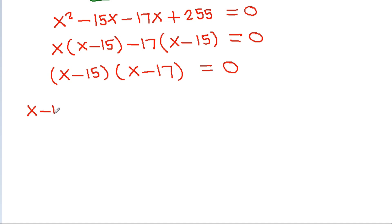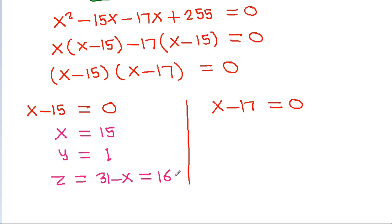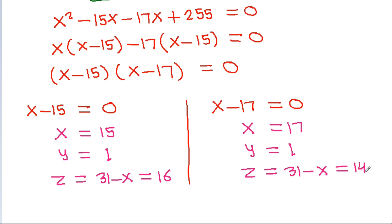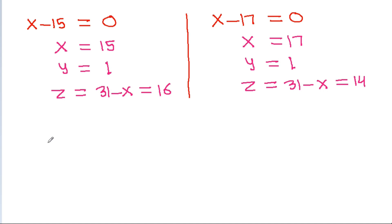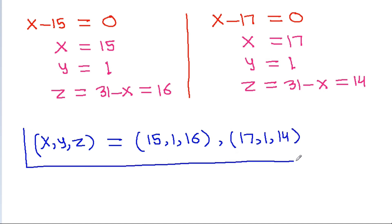So either x - 15 = 0 or x - 17 = 0. From here we get x = 15 or x = 17. With y = 1 and g = 31 - x: when x = 15, g = 16; when x = 17, g = 14. So the two solutions are (x, y, g) = (15, 1, 16) and (17, 1, 14). Thank you.